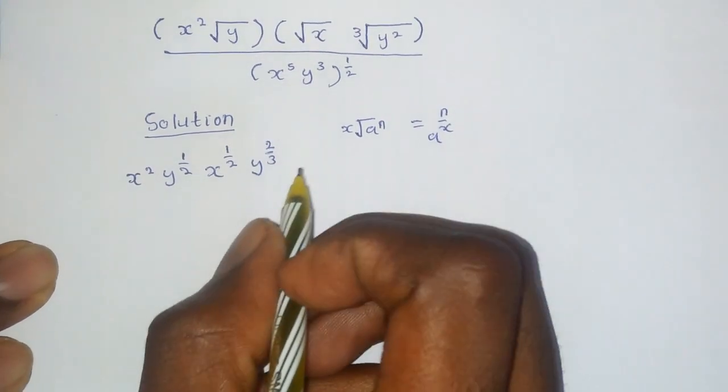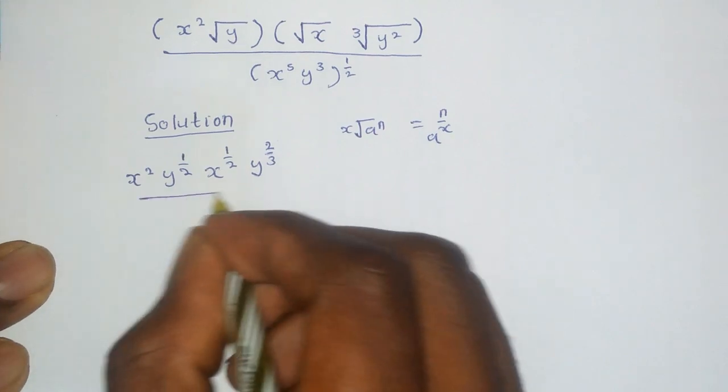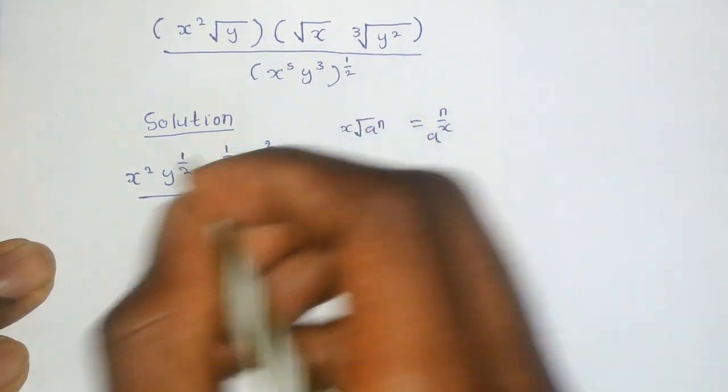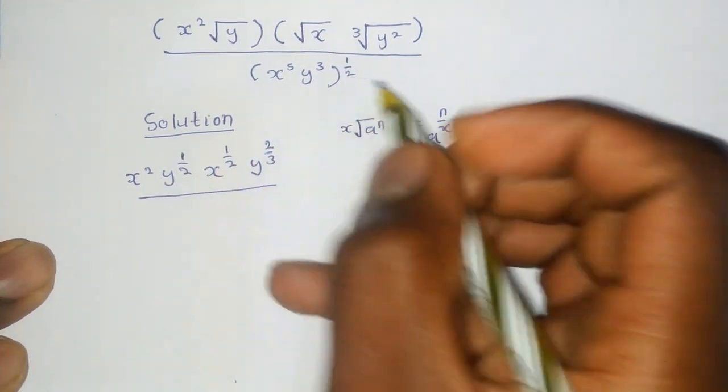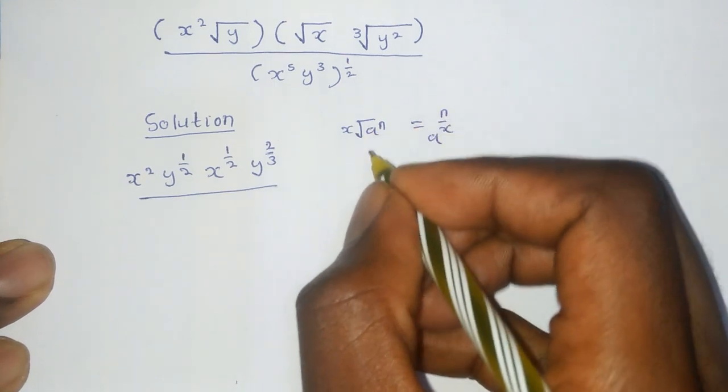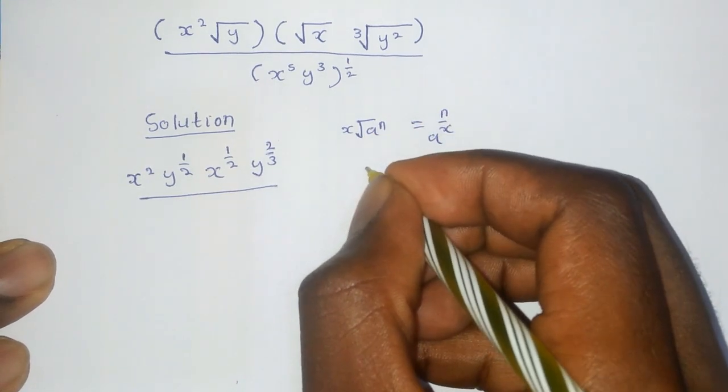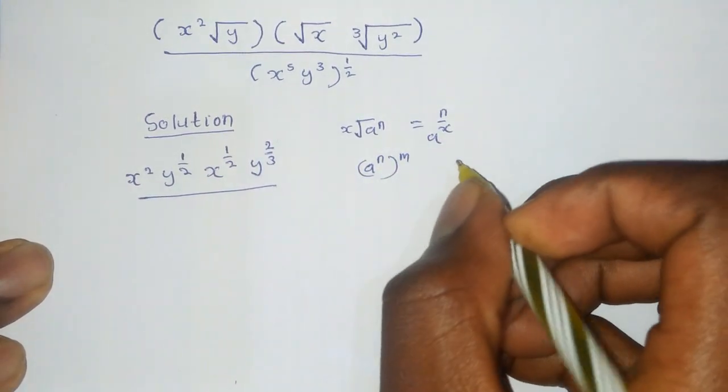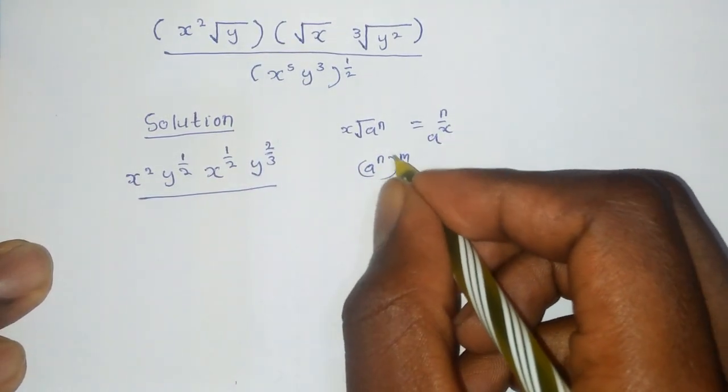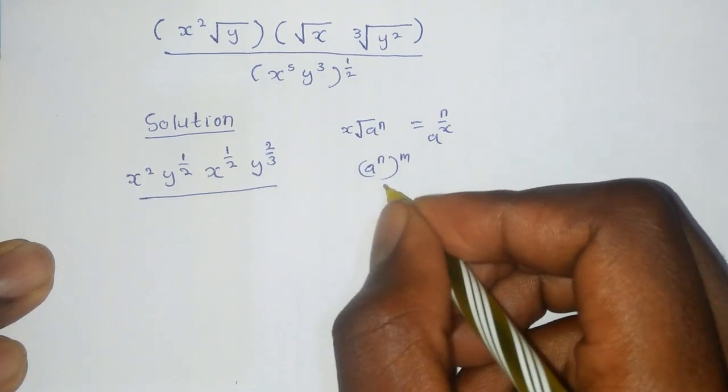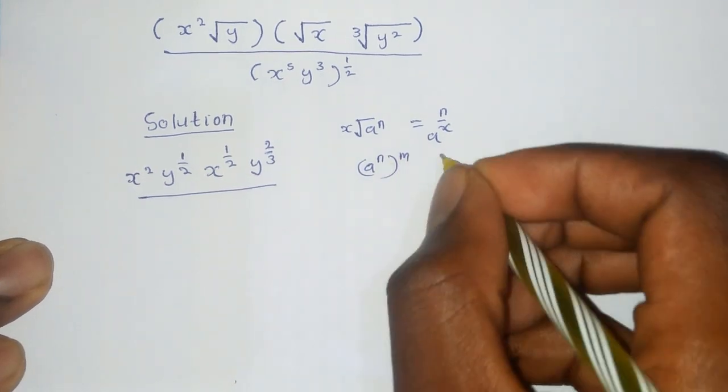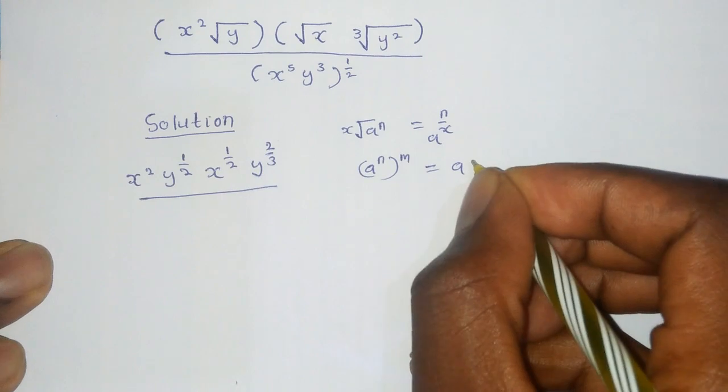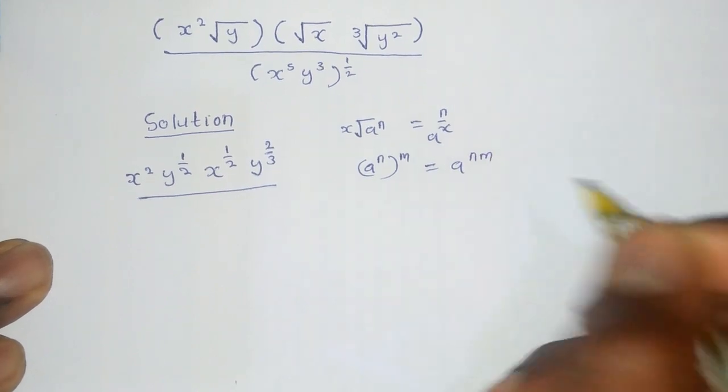Now, reaching at this point, we divide by the denominator, which is when we multiply powers in exponents. For example, if you are given a raised to n m, an expression that is given in this way, this means we multiply the powers, which will be a raised to n m.